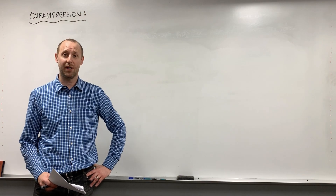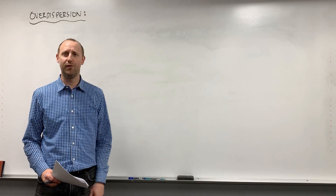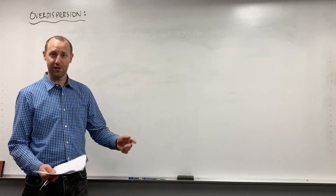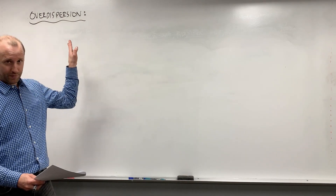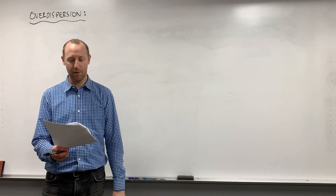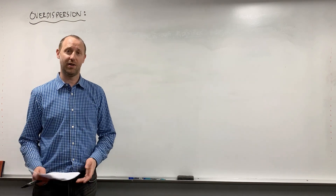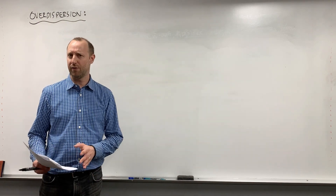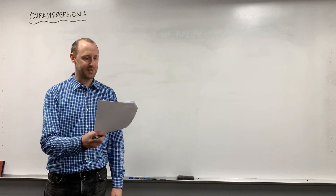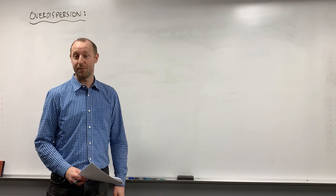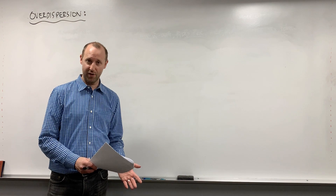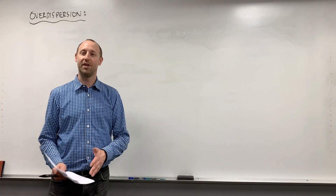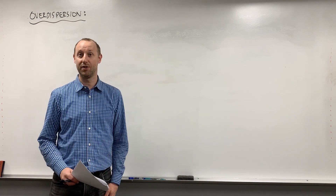We're going to spend a little bit of time talking about a few of the commonly encountered problems in Poisson regression. The first one is overdispersion — I'll start with that and get into it in a moment. The second common problem is excessive zeros, or zero inflation. So first let's talk about what overdispersion is, how we can check for it, what the common causes are, and what the common solutions to addressing it are.